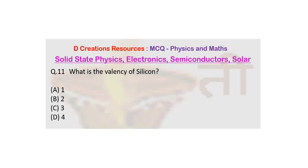So there's a very simple question. The question is: what is the valency of silicon? And the options are A1, B2, C3, and D4.